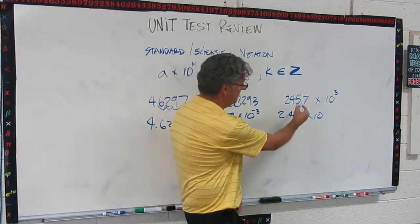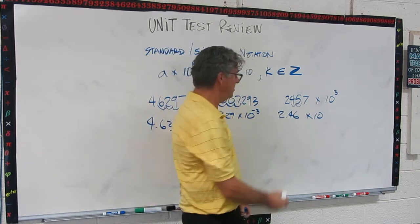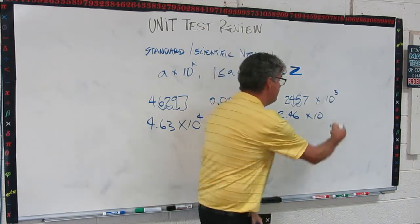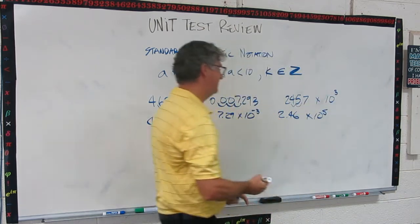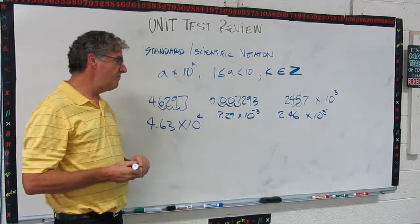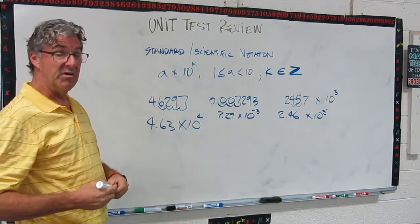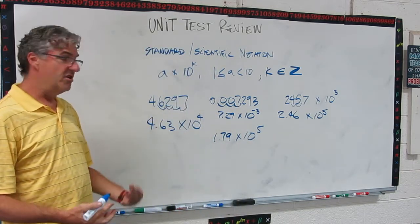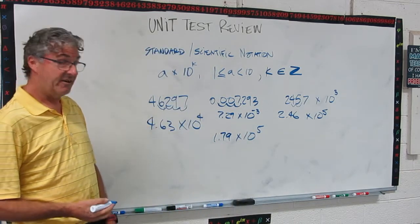Now we know we're going to have to move this decimal 1, 2. But it's not 10 to the 2, because we have a 3 already. So we need to add them up. So that would be 10 to the 5. Now let's just do one more. I want you to write this number in regular notation. Pause the video and write that in regular notation.